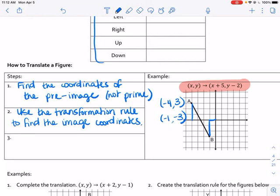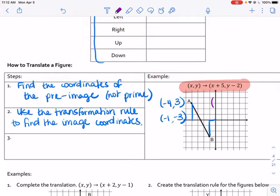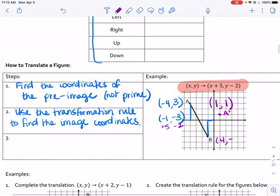So we have x plus 5. My new coordinates will be x plus 5. Negative 4 plus 5 is 1. And then y minus 2. So 3 minus 2 is 1. So our new A will be at 1, 1. So we're going to say A prime. That's our new A. Then we need for B, it's going to be x plus 5. So negative 1 plus 5 is going to be positive 4. And then y minus 2 is going to be negative 3 minus 2 is negative 5.